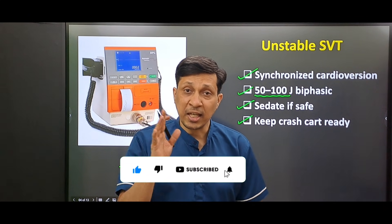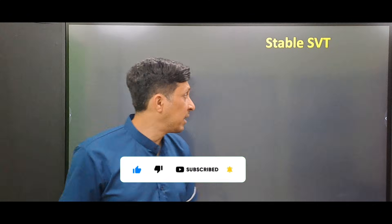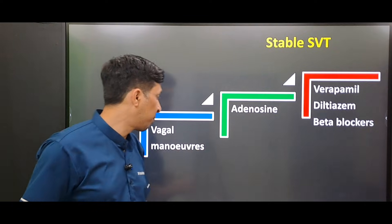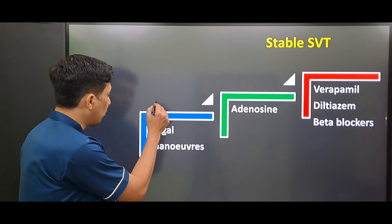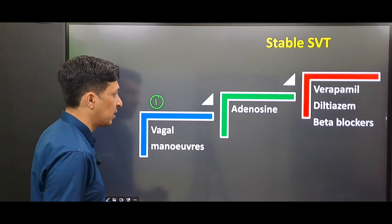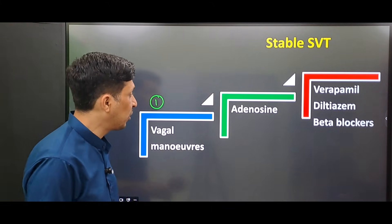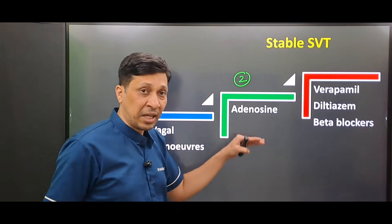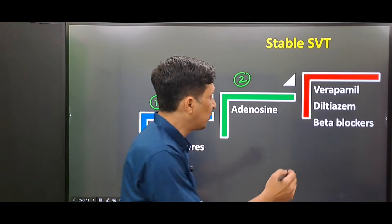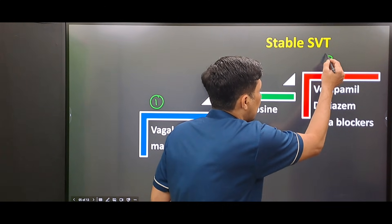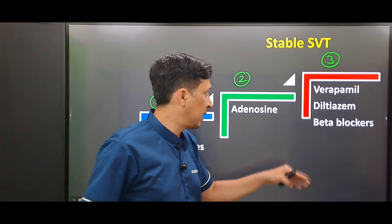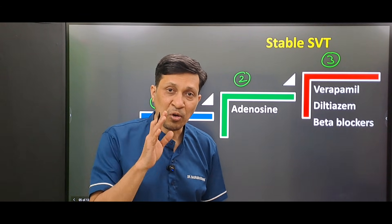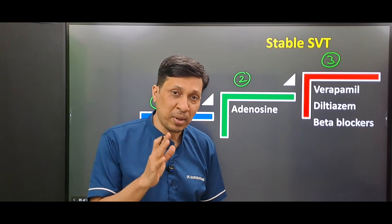If the patient is hemodynamically stable, there are three steps to follow. In the first step, we will go for vagal maneuvers. If this is not effective, we will go for IV adenosine. If adenosine is also not effective, we will go for second-line anti-arrhythmic drugs — verapamil, diltiazem, and beta blockers. Now we will see these steps one by one.